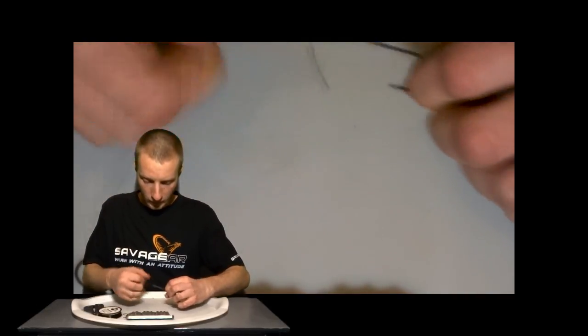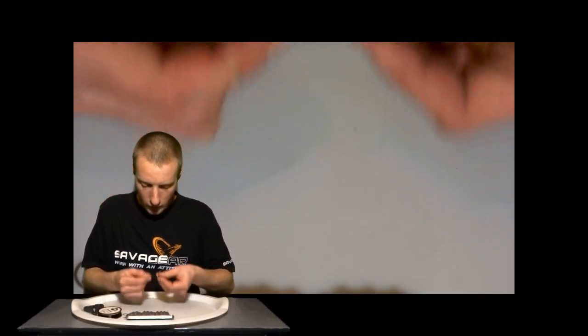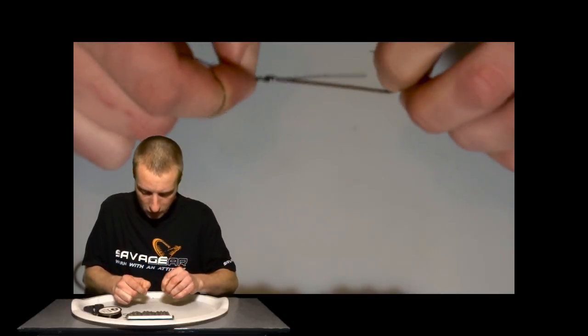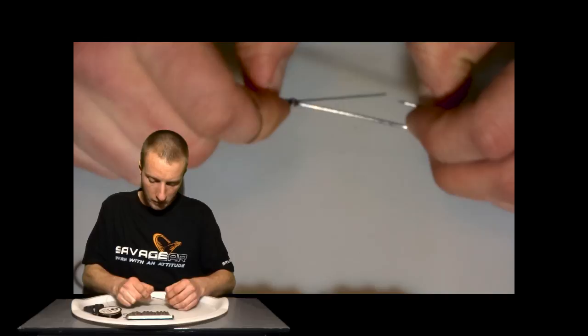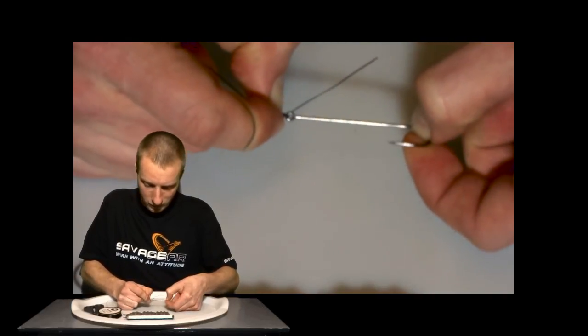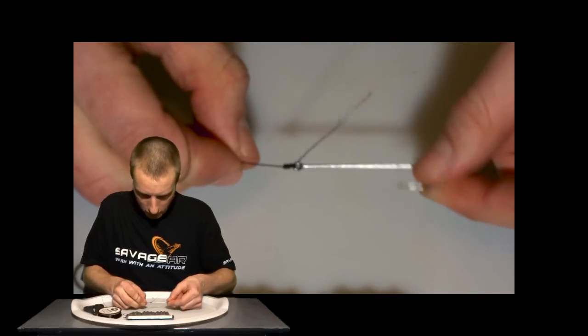Okay, give it a little pull on the tag end. If it's not bedding neatly enough, use your thumb to push that knot down on itself. So there you go, you can see that now.